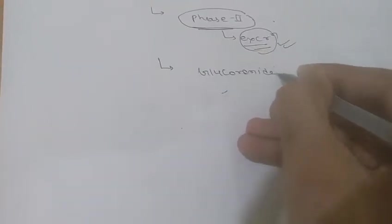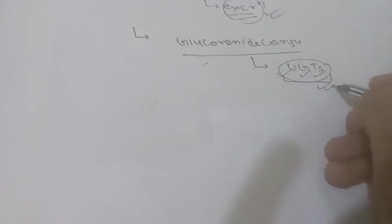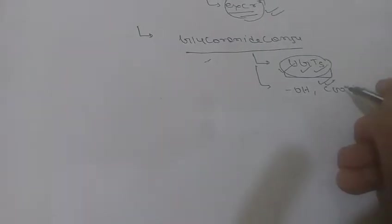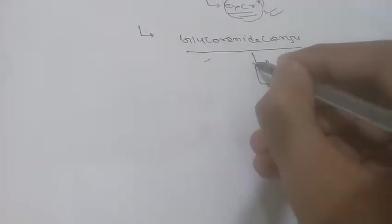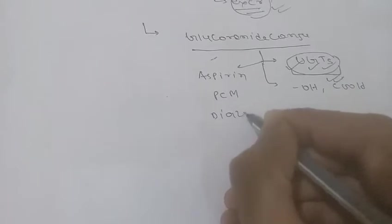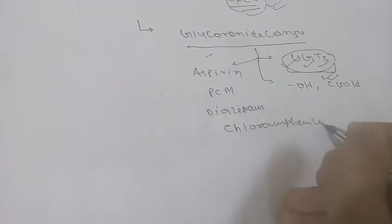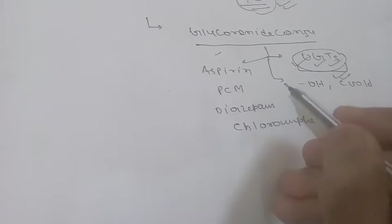Phase 2 reactions require higher energy compared to phase 1 reactions. The first and most important phase 2 reaction is glucuronide conjugation, carried out by a group of enzymes known as UGTs — UDP-glucuronosyltransferases. Compounds with hydroxyl or carboxyl groups are easily conjugated with glucuronic acid. Common drugs undergoing glucuronide conjugation include aspirin, paracetamol, diazepam, and chloramphenicol.